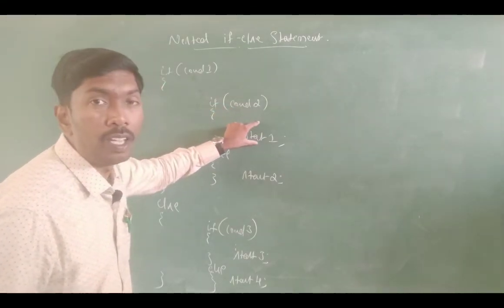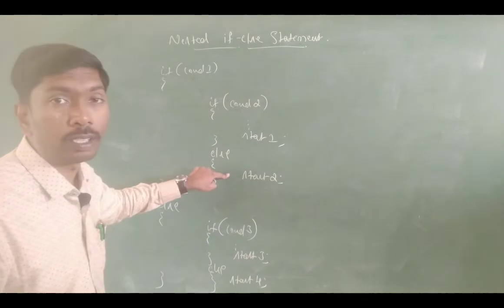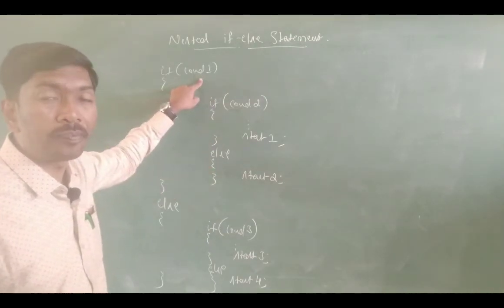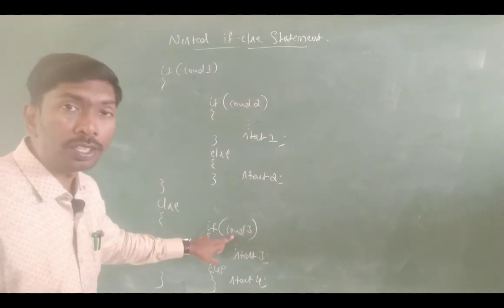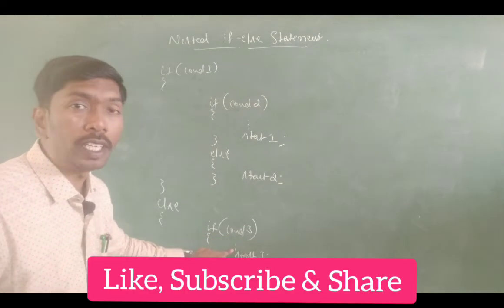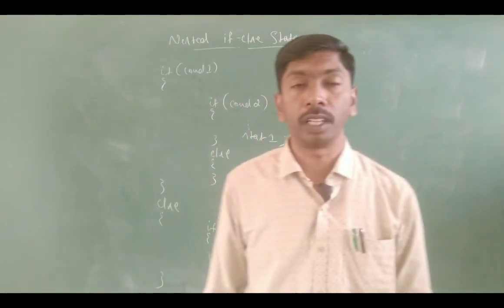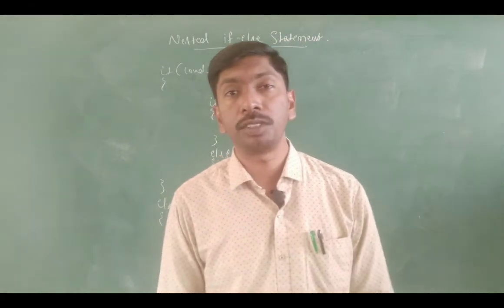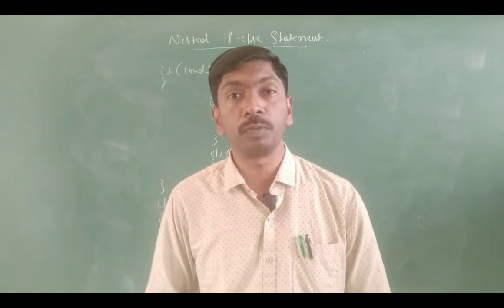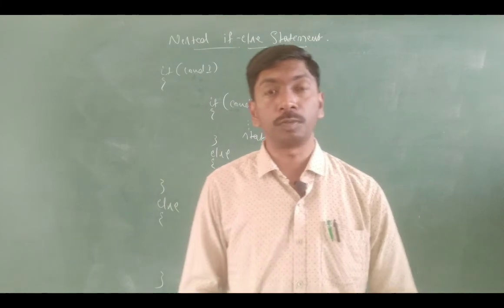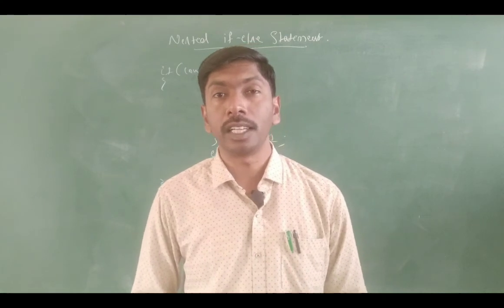If condition 1 is true, this block will execute. Otherwise, the else block will execute. Then it will check the condition again — if the condition is true, statement 3 will execute; otherwise statement 4 will execute. In some situations, when one condition inside an if-else is not sufficient, we go for the nested if-else concept, where an if-else contains another if-else statement. That is nested if-else.